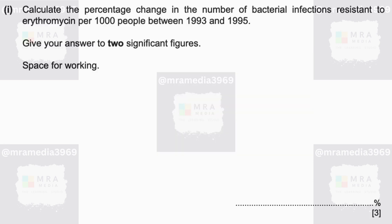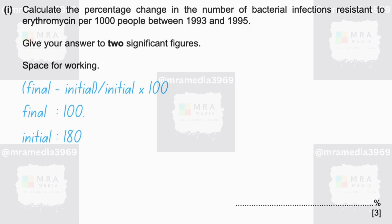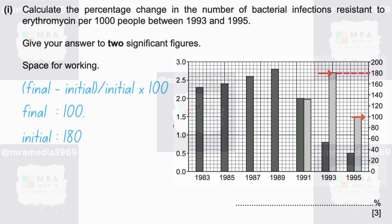Calculate the percentage change in the number of bacterial infections resistant to erythromycin per 1,000 people between 1993 and 1995. Give your answer to two significant figures. The formula for percent change is: final minus initial, divided by initial, multiplied by 100. So final is 100, and initial is 180 — it's simply reading off the graph.